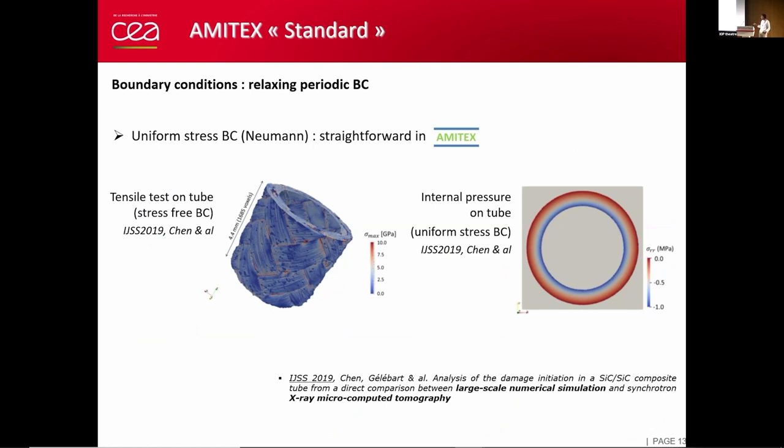The last point is the possibility to relax a periodic boundary condition. For example, here this is a composite tube that was in the PhD of Young. We can assign new properties around the tube and within the tube, which simulate stress field boundary conditions. This is a second example where we have introduced internal pressure in the tube with new properties, and we found the good analytical results.